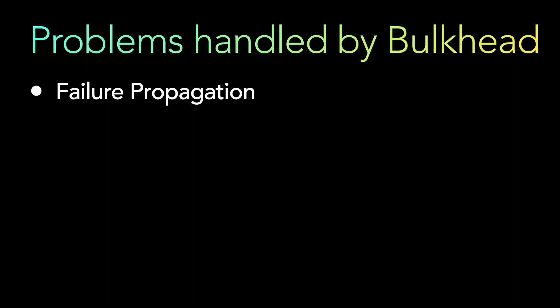Now let's look at the problems handled by the bulkhead pattern. The first is failure propagation. Because each service's resources — storage, compute, resource pools, security — are contained and not shared, and there are no synchronous service-to-service calls, associated failures are contained and do not propagate. So when a service suffers a software or infrastructure failure, no other service is disrupted and the entire system is not impacted.